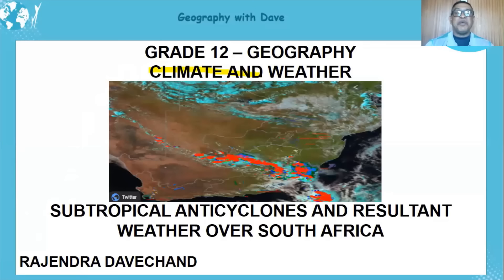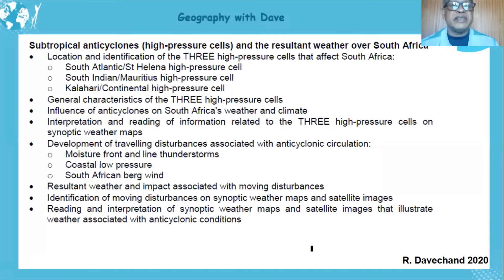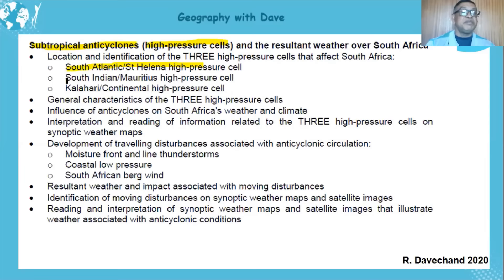Hello learners, hope you are keeping well. Today's lesson is climate and weather, with specific reference to subtropical anti-cyclones and resultant weather over South Africa. We're going to look at the exam guideline — subtropical anti-cyclones, also known as high pressure cells. Remember, a high pressure cell is an anti-cyclone, a low pressure cell is a cyclone. We'll focus on the three that affect us in southern Africa.